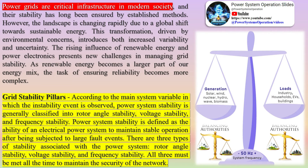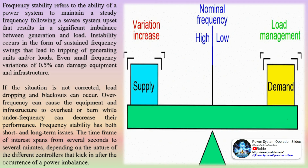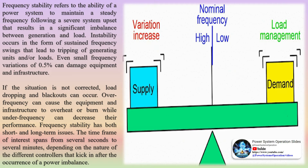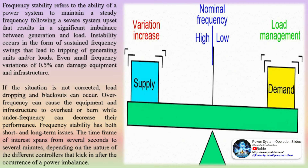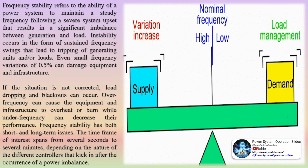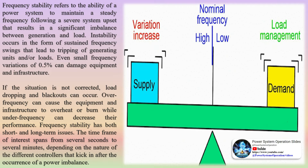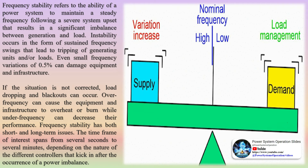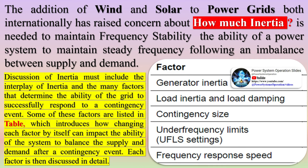As renewable energy becomes a larger part of our energy mix, the task of ensuring reliability becomes more complex. According to the main system variable in which the instability event is observed, power system stability is generally classified into rotor angle stability, voltage stability, and frequency stability. Power system stability is defined as the ability of an electrical power system to maintain stable operation after being subjected to large fault events.